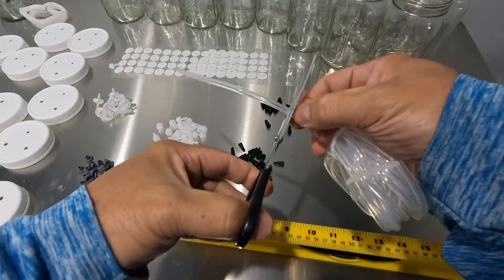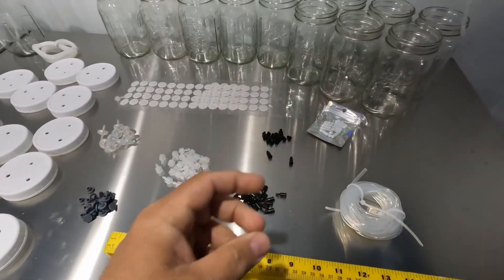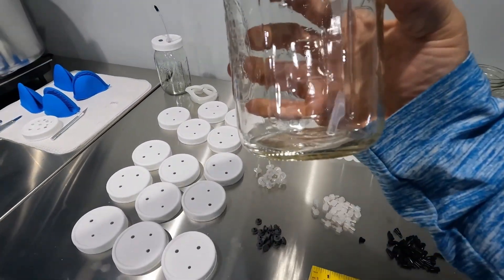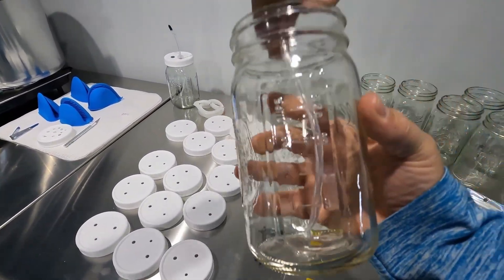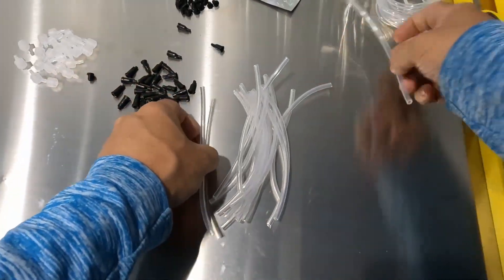That allows us to connect to the lid, have enough to go into the jar, to the bottom of the jar, without having too much slack and actually not plugging itself. If you have too much slack on the bottom it can plug.